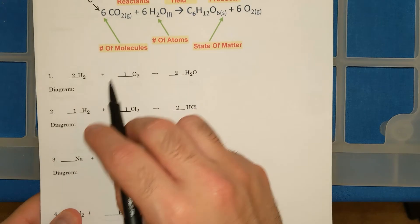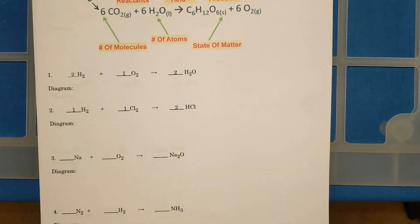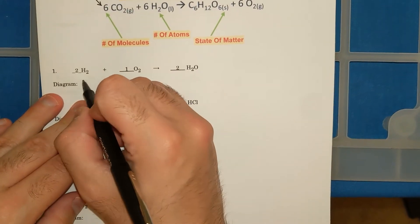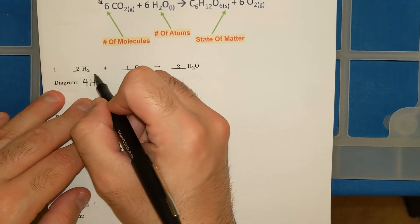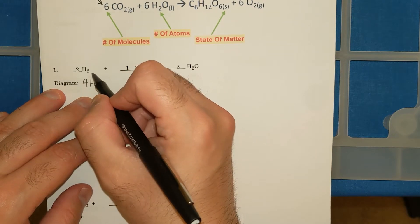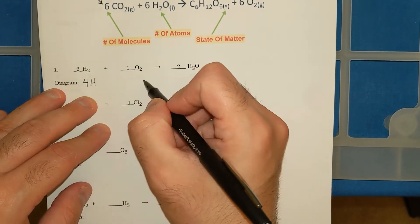We had already done these two examples in a previous video, and we can check to make sure I have the right number of atoms. I have four hydrogens because it says 2H2. Remember that little 2 is a subscript. 2H2, 2 times 2 is 4 H's.